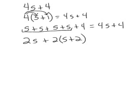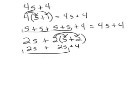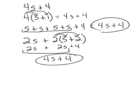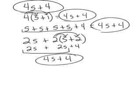Let's look at this last one. I'm going to go ahead and distribute this multiplication: two times s is 2s, and two times two is four. Then I'll bring down the rest of it and combine like terms. I have two skis plus two more skis, which gives me four skis. Bringing down the rest gives me 4s plus four. So this one must also be equivalent.